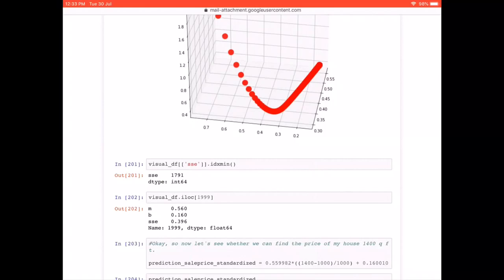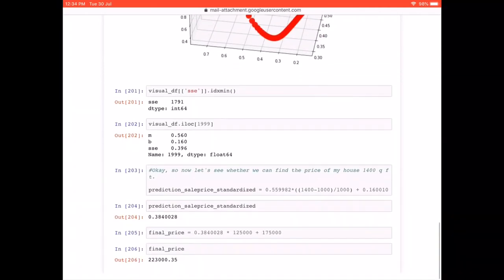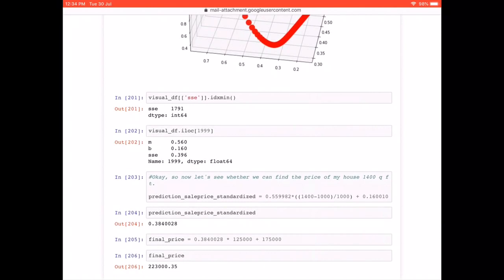So based on that, what we can do is, you can utilize that to calculate our future values. So now that I have my m and b, so that means I can write a new straight line, y is equal to mx plus b. And what it will give me is a new prediction sale price. But keep this in mind, this prediction sale price is a standardized value. So we have to convert it back to the original scale.